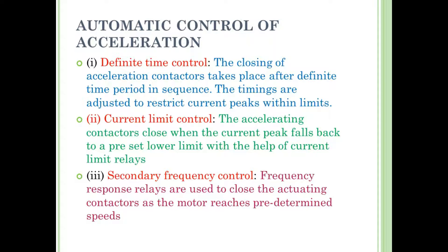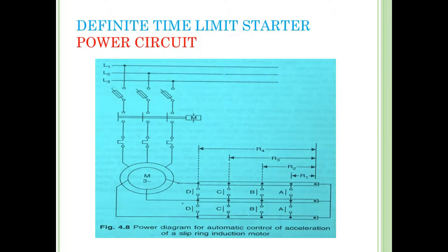The Definitive Time controller uses rotor resistance. The Current Limit controller uses current limit. The Secondary Frequency controller uses rotor frequency acceleration — the Secondary Frequency Acceleration Controller. We need to get the rotor resistance starter.